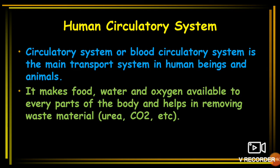Now we are going to see the human circulatory system. The circulatory system, or blood circulatory system, is the main transport system in human beings and animals. In human beings, blood is the main thing responsible for carrying digested food, oxygen, carbon dioxide, and waste materials throughout the body.